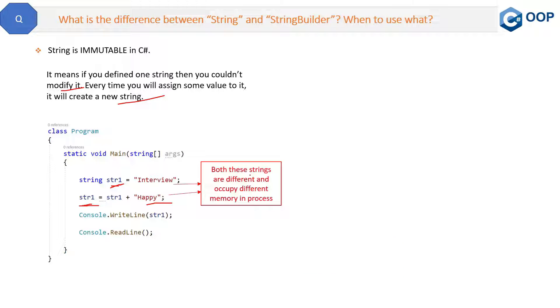So in short, both these strings are different and occupy different memory in process. By looking at it, you will be thinking that these are the same string - str1 interviews same and this new str1 which will be interview happy will be same.